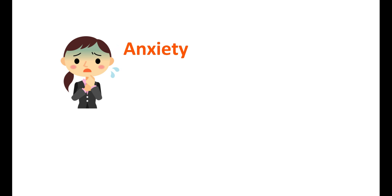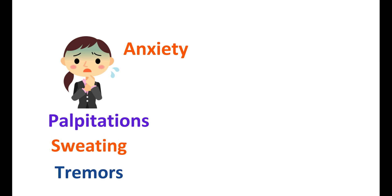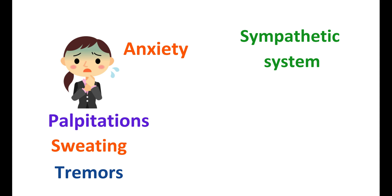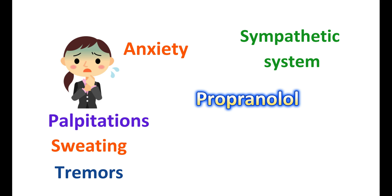Beta blockers are useful in people where anxiety is associated with physical symptoms like palpitations, rapid heartbeats, sweating, and tremors — all of which are due to excessive stimulation of the sympathetic system. To control these panic symptoms, beta blockers like propranolol can be used. Propranolol is a non-selective beta blocker that acts on the heart to reduce contractions and also acts centrally to reduce sympathetic discharge, making it highly useful in panic anxiety disorder. As a beta blocker, it can produce hypotension and bradycardia as important side effects.